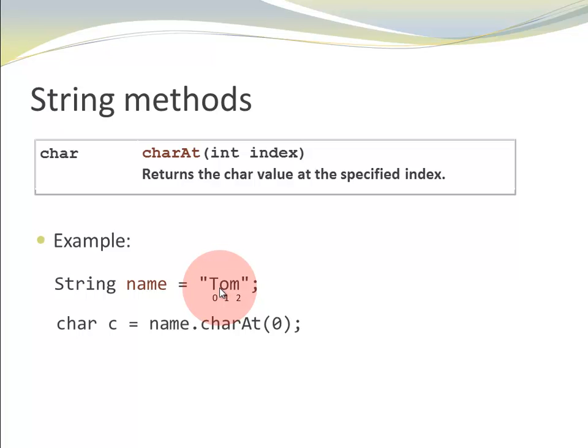You saw this already with the arrays and in other situations. And because we start counting at 0, the 0th character is T. And charAt 0 is going to return T. Also notice that the last character has index 2 and the length of my name is 3. So the last character is name dot length minus 1.